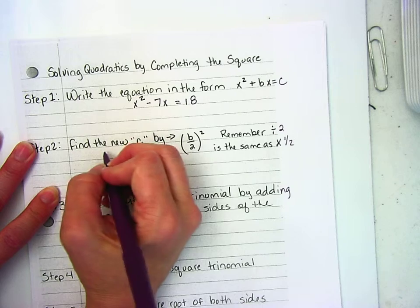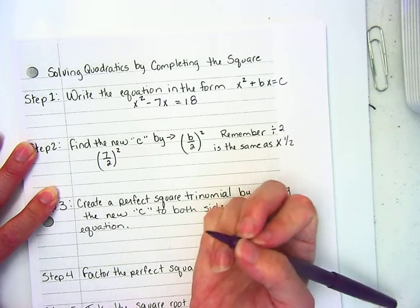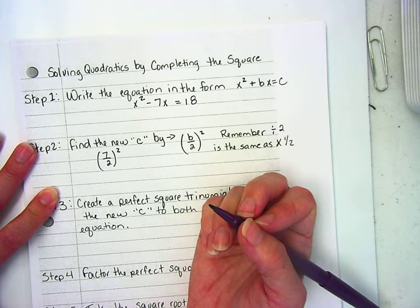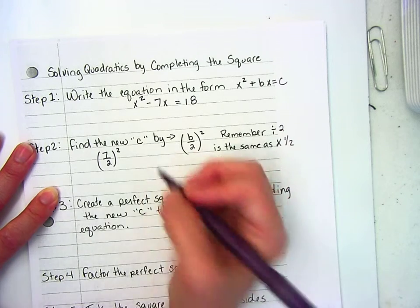So my B, I have 7/2, square it. What do you get? Square both numbers, square the top, square the bottom. What is it? 49/4. Very good.